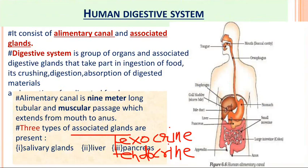The alimentary canal is a 9-meter-long tubular muscular passage which extends from mouth to anus. It consists of mouth, buccal cavity, pharynx, esophagus, stomach, small intestine, and large intestine with anus. Glands are organs which synthesize and release substances such as secretions or enzymes. They can be of two types: exocrine, which pour their secretion into a duct, and endocrine, which pour their secretion directly into the blood.